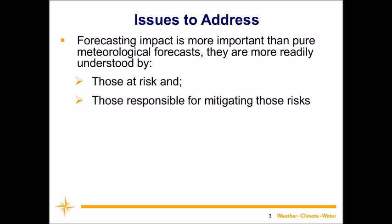Forecasting impact is more important than pure meteorological forecasts because it's really about getting people to make decisions. Impact-based forecasts should be more easily understood by those who are at risk — somebody facing severe weather who needs very clear and concise information to make a quick decision — and by those responsible for mitigating risks, typically emergency management people or first responders, who need to decide what actions to take to help mitigate risks to those they're responsible for.